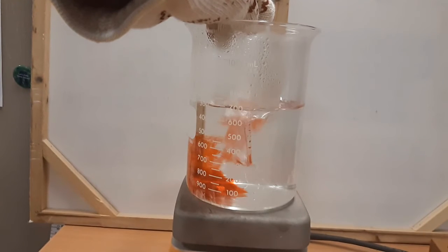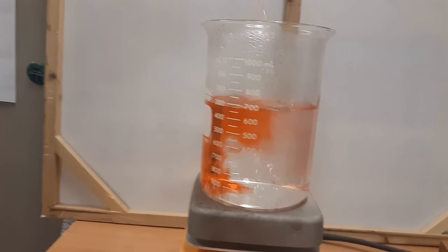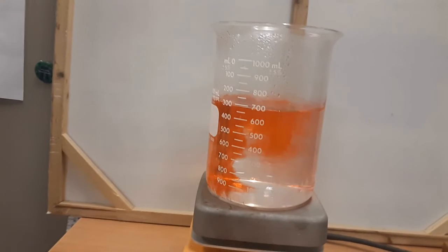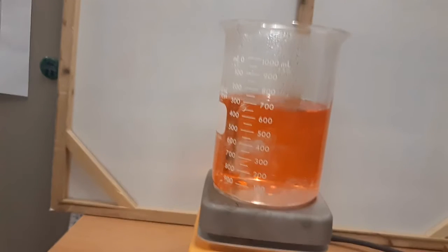We see that the red rises up on the left-hand side, gets to the top, and then sinks back down on the right-hand side. This shows us a convection cell where hot water will rise up and the cold water will sink down.